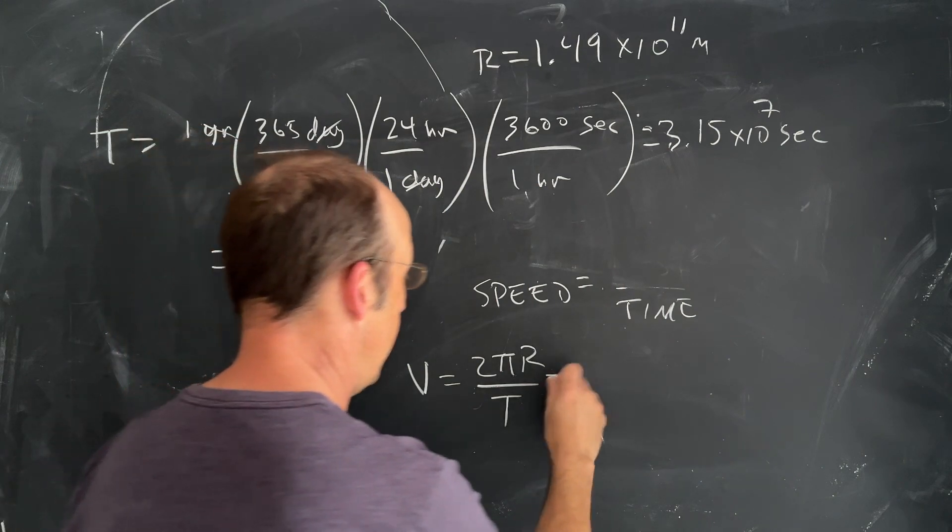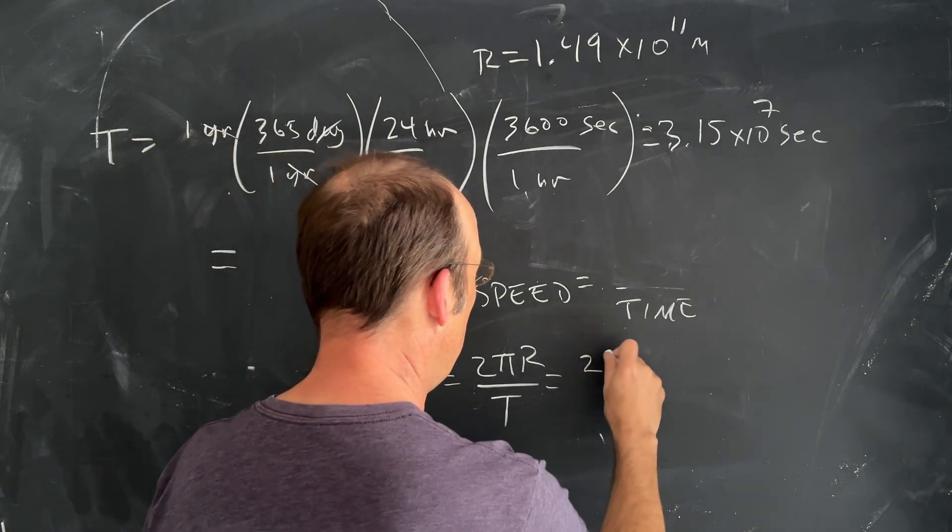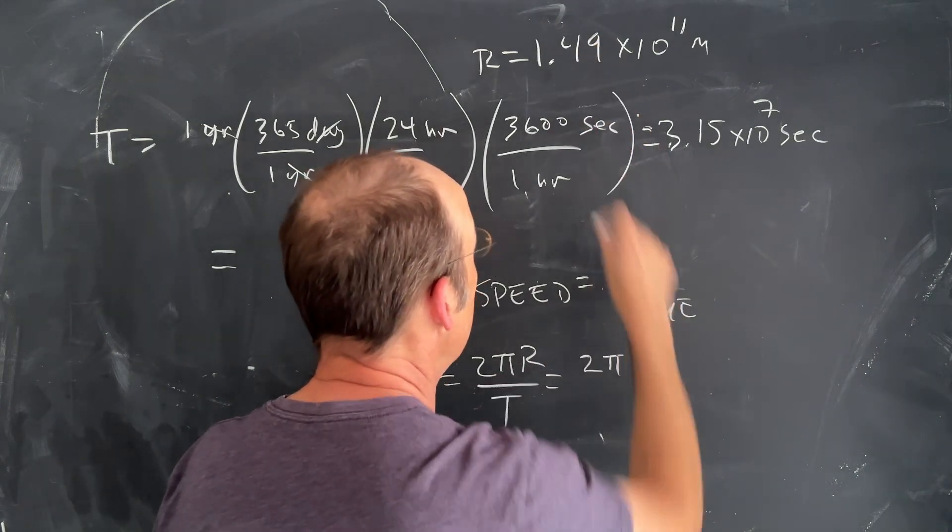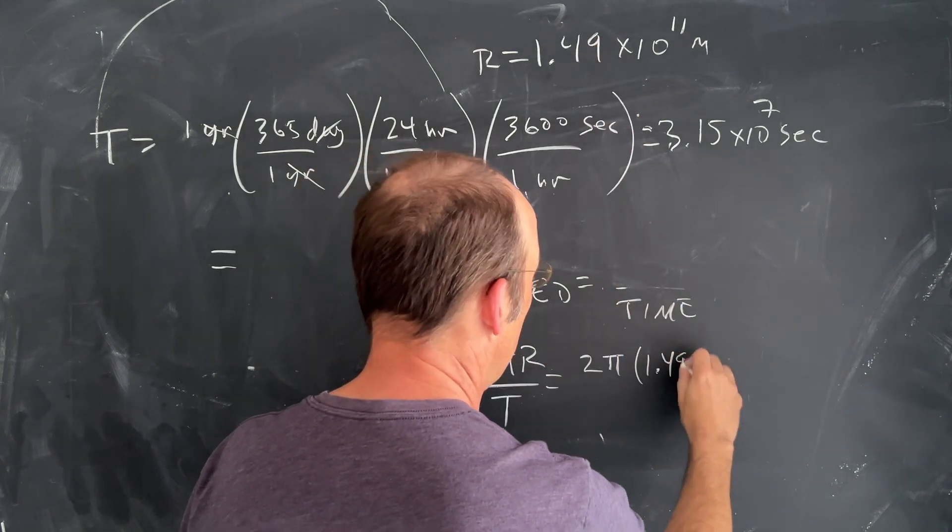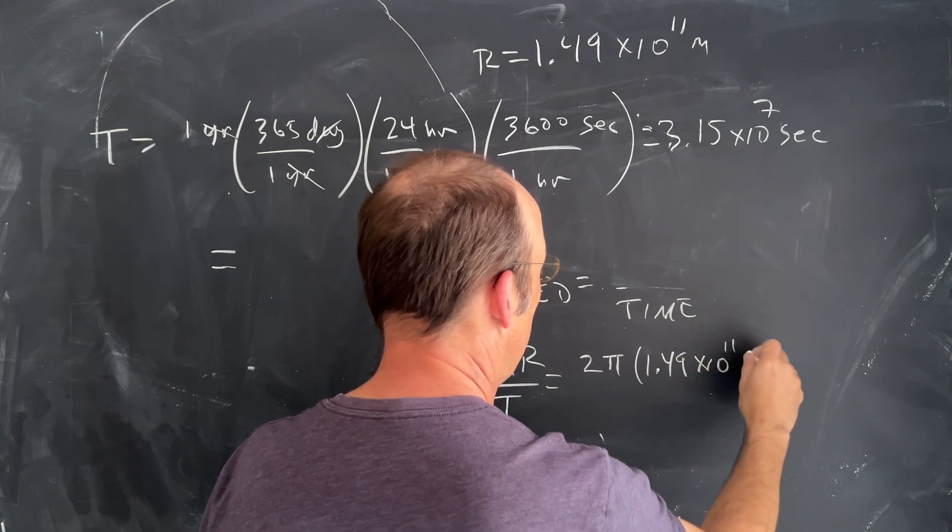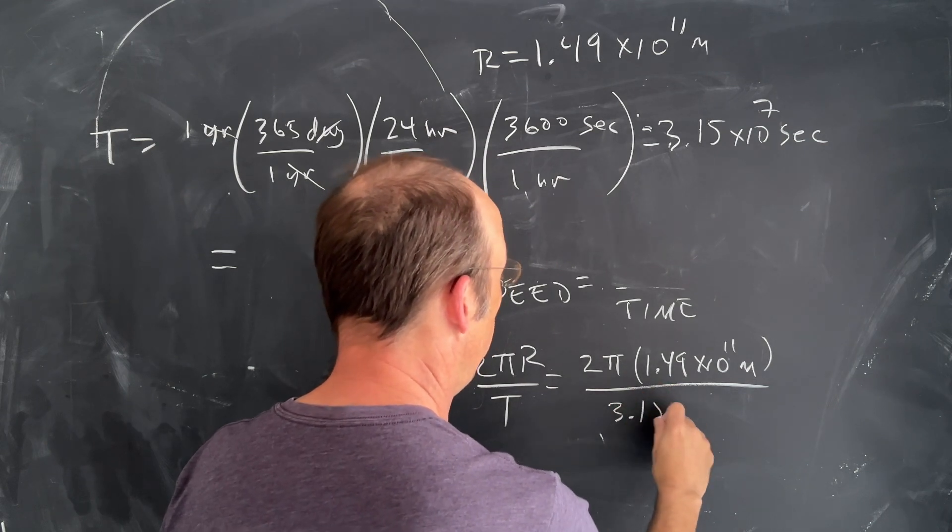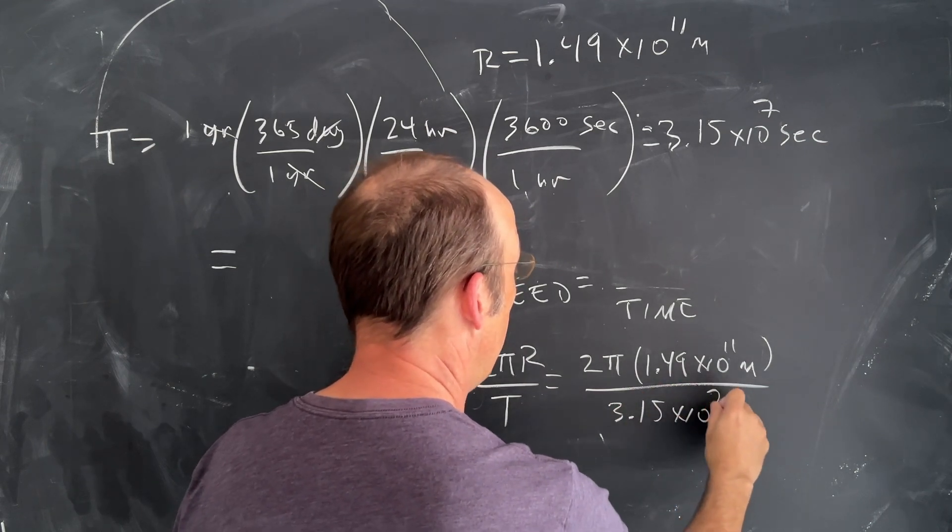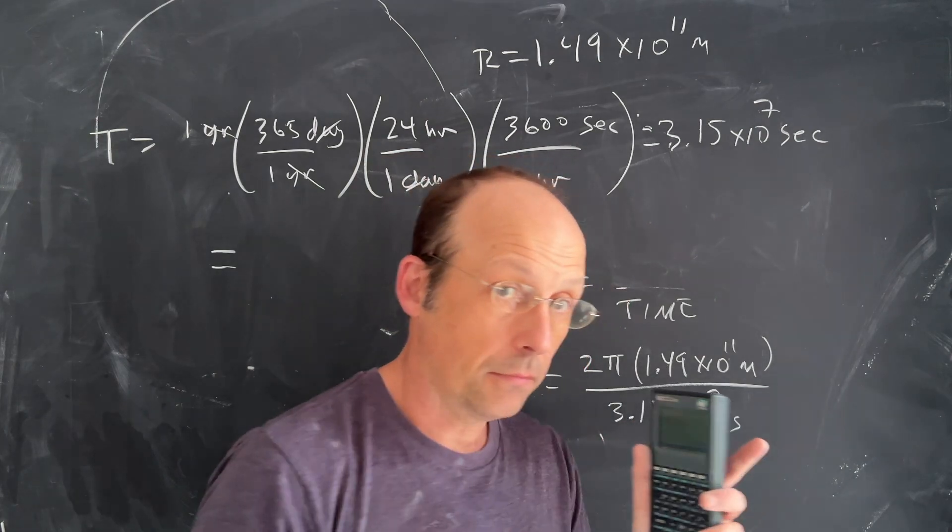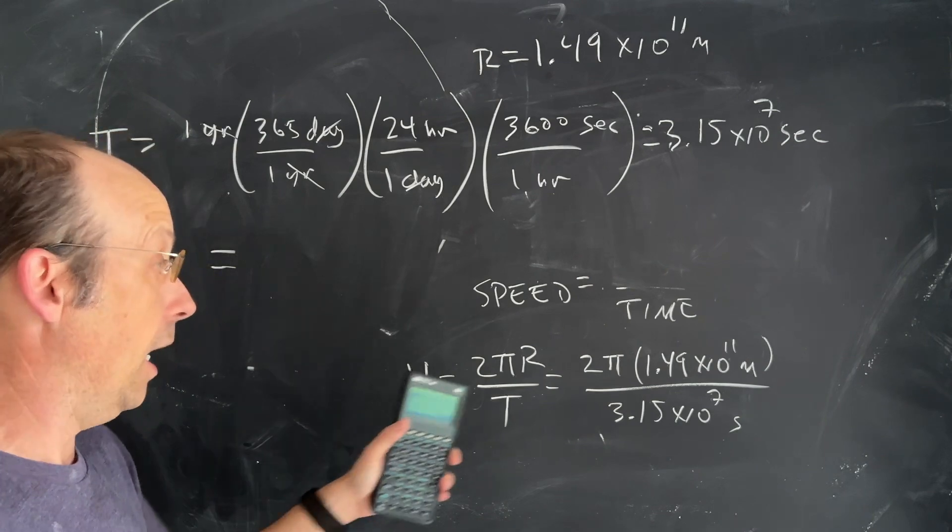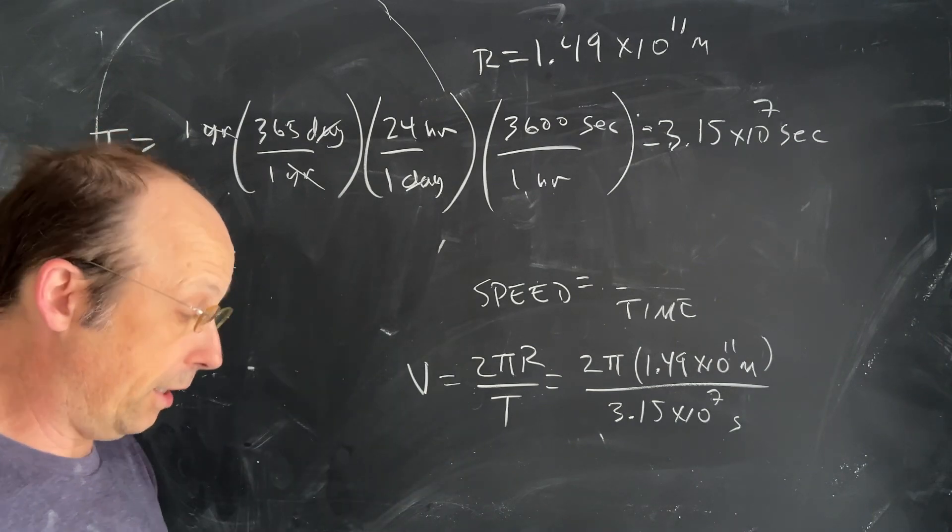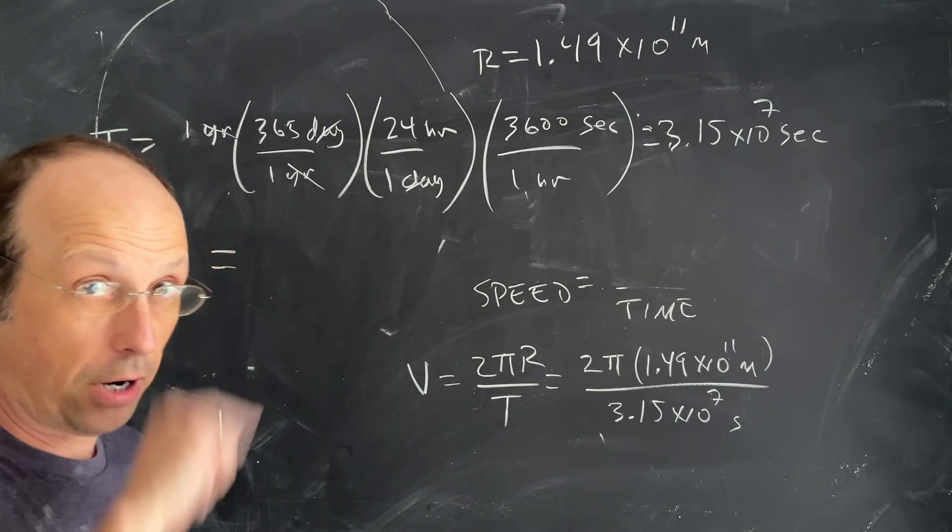Now I can use that to calculate my speed: v = 2π × 1.49 × 10^11 meters divided by 3.15 × 10^7 seconds. Do this calculation, because a lot of people will get it wrong when they enter it in their calculator. I'm going to do it—you do it too and see if you get the same thing.